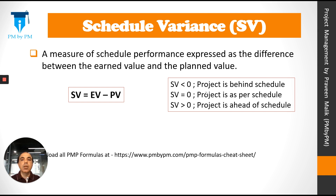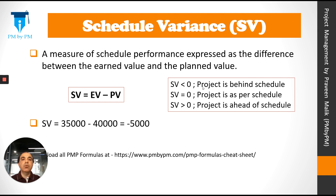Schedule variance is a measure of schedule performance expressed as the difference between the earned value and the planned value. Earned value is the monetary value of the work completed, whereas planned value is the monetary value of the work we wanted to complete. It can be expressed as the formula: SV = EV minus PV. For our example project, SV comes out to be minus $5,000. Essentially it means that we should have done $5,000 worth of work more than what we have done — we are behind schedule. We should have done work worth $40,000, that is what we had planned, but we have only completed work worth $35,000, so we are $5,000 in negative.